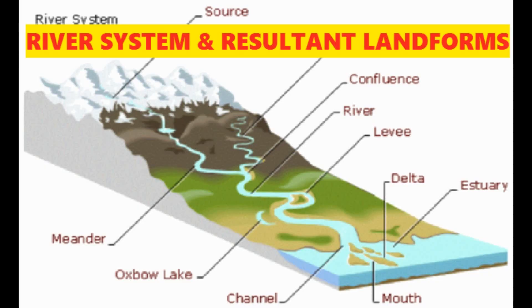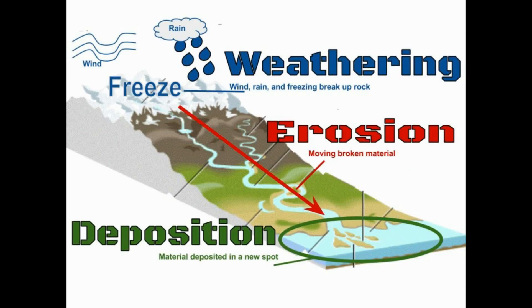Today we will share an important topic of geography: landforms created by river systems. It is important to know how landforms are created by rivers. When a river flows, erosion and deposition create different river landforms. The landforms differ at the source of the river and at the downstream.